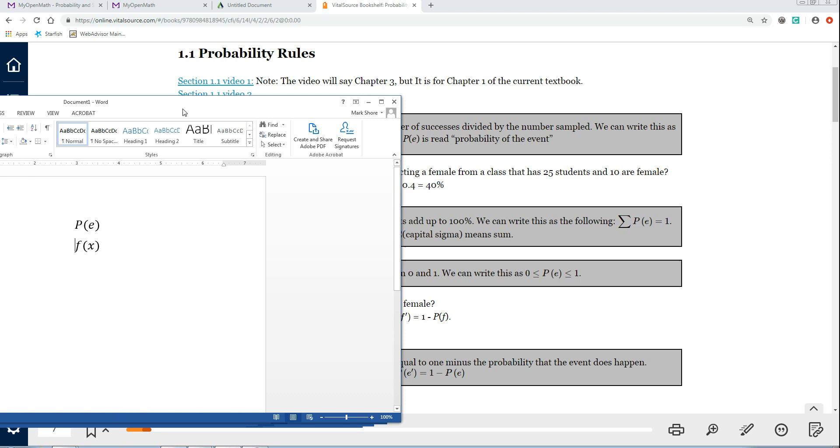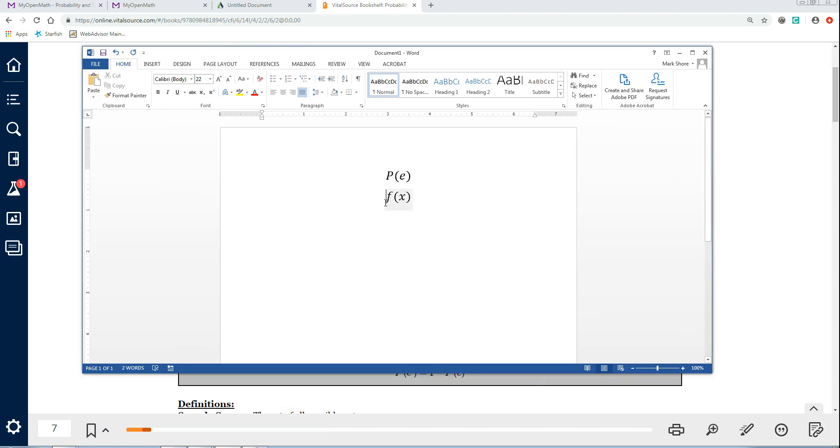Now, you can relate to that a little bit because you've probably seen in algebra before this symbol right here, f of x. So we read this. This doesn't mean f times x. This means f of x. It's a function of x. And this is the same thing. You read this probability of an event. That event could be what's the probability of randomly selecting a female or whatever you're looking for.